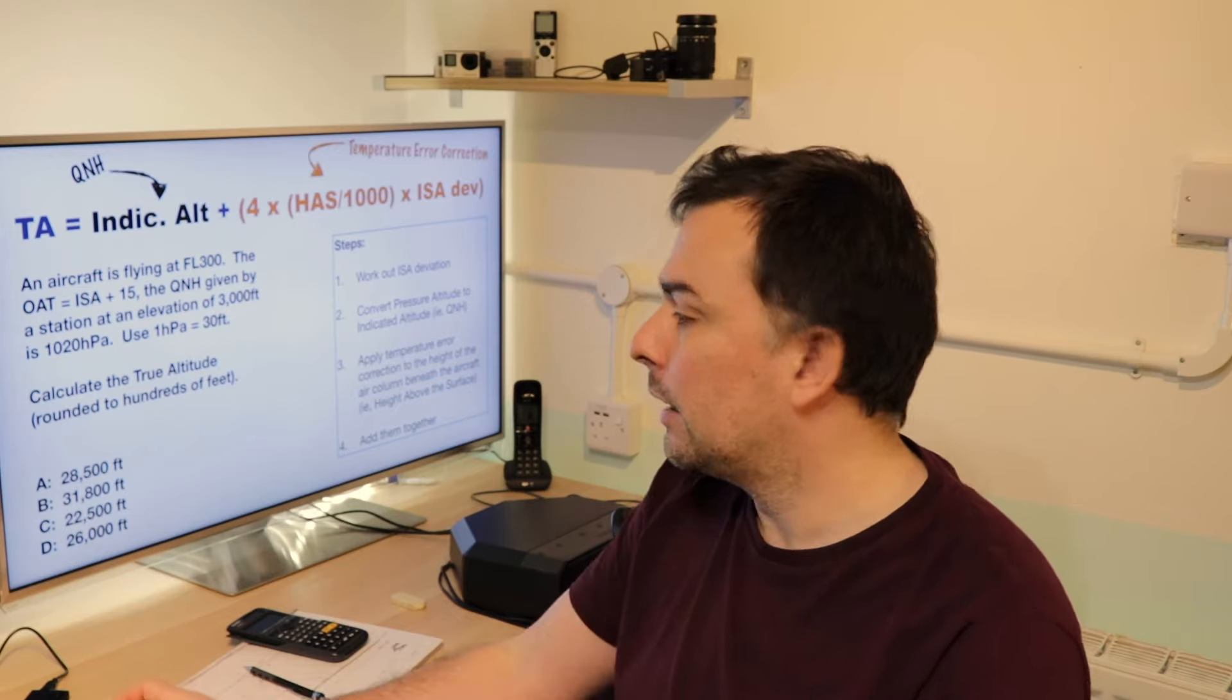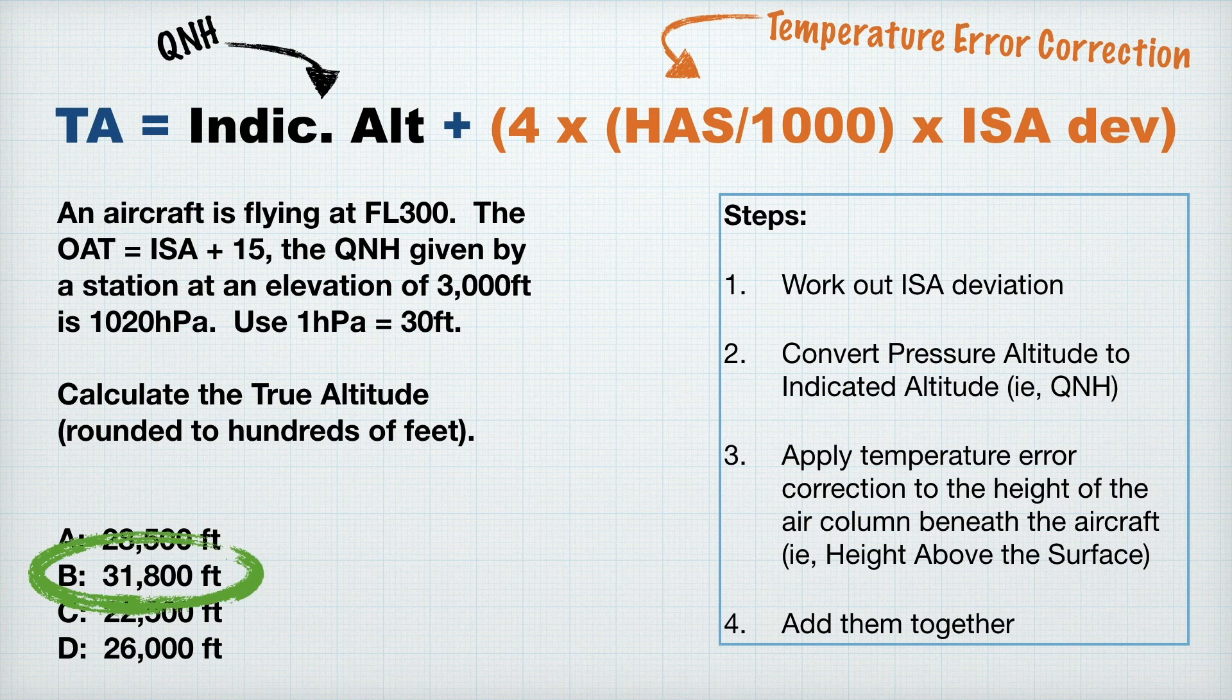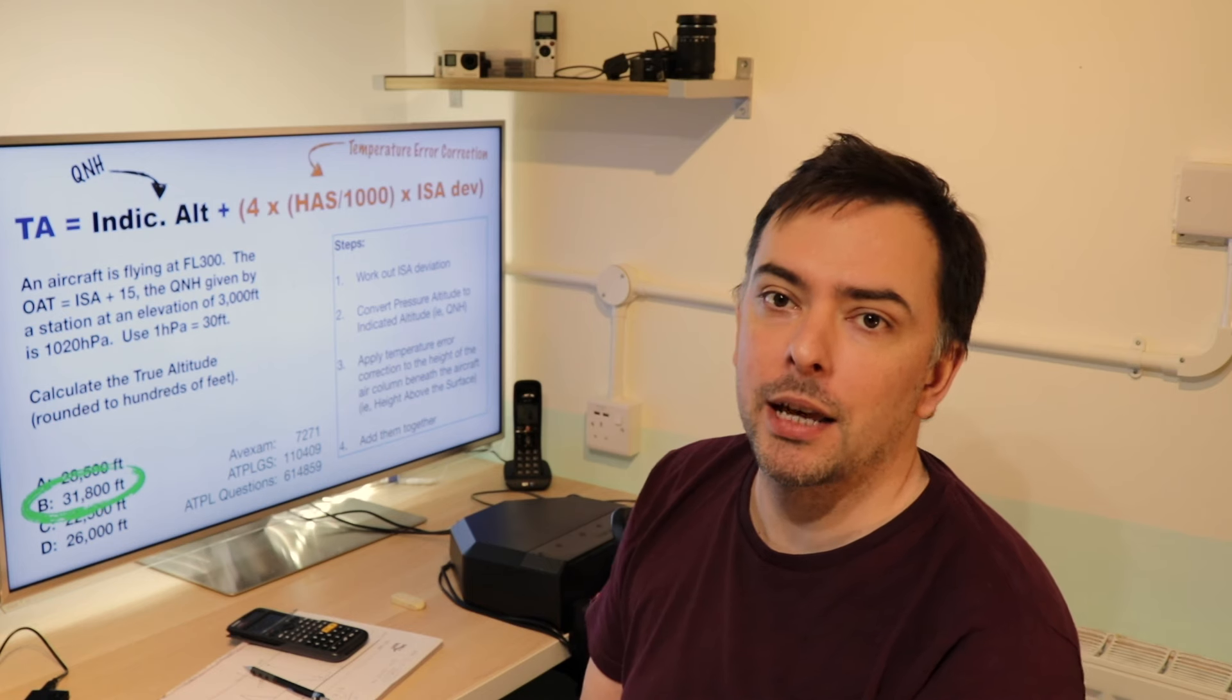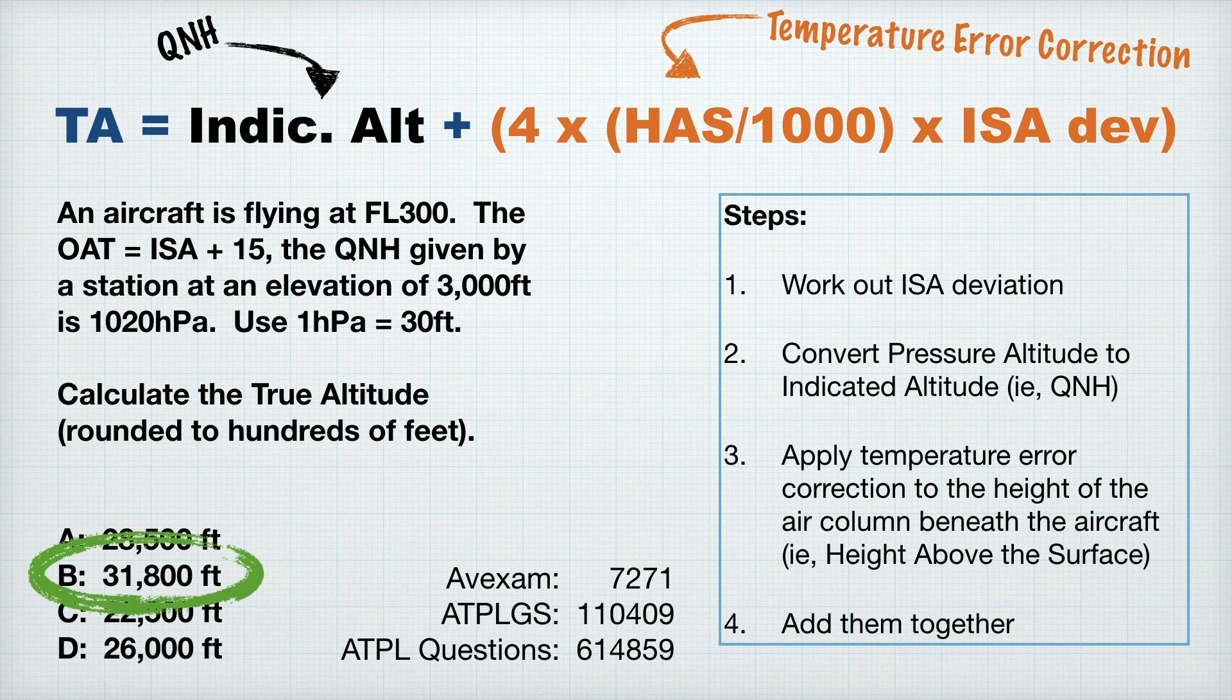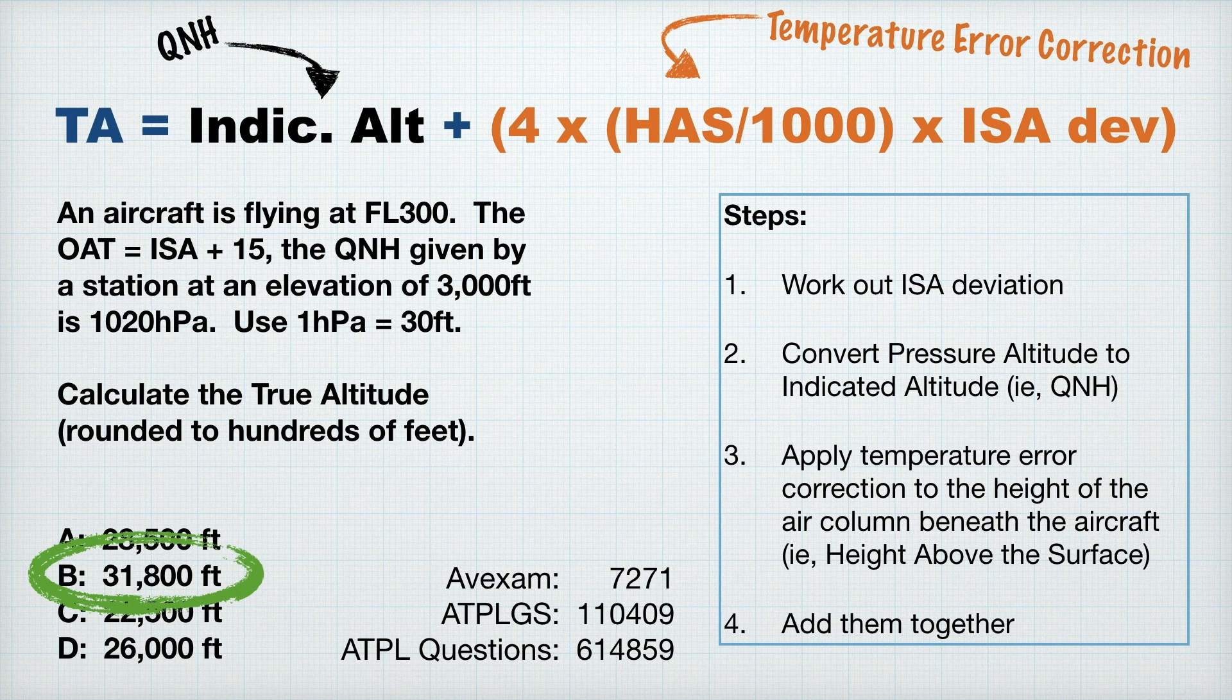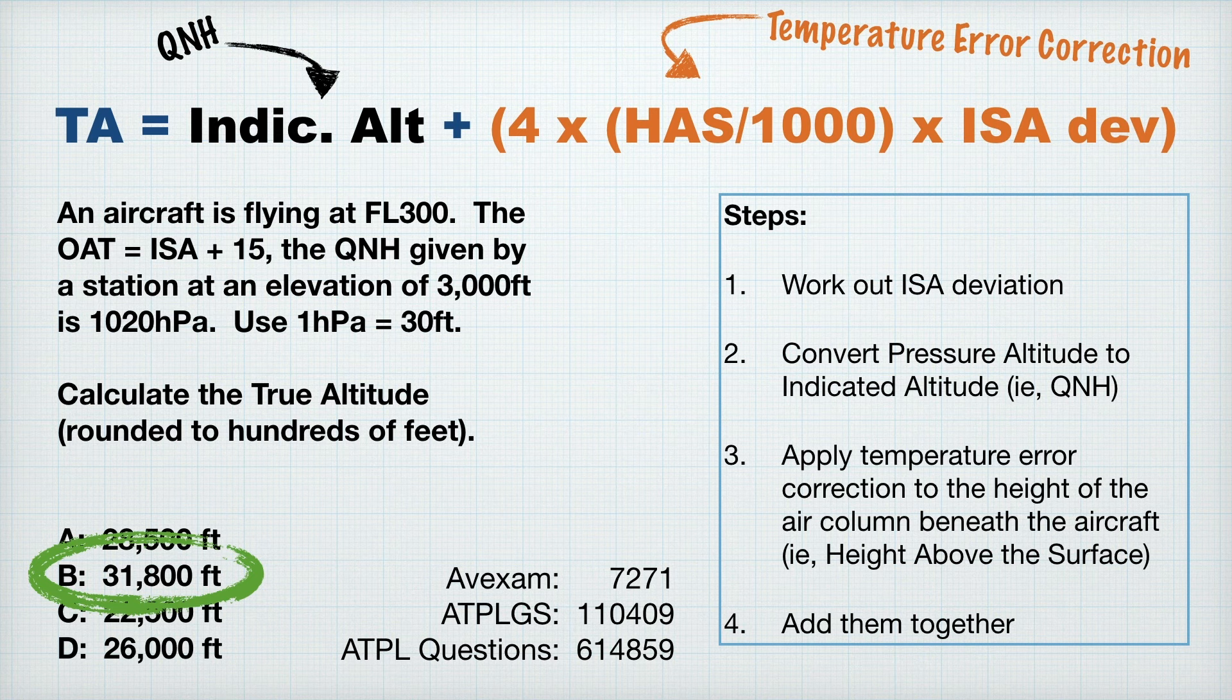Being cheeky, if you've made a mistake somewhere along the way, there's a good chance that you could end up at one of these other answers instead. Let's see what the correct answer is. Perfect. B, 31,800 feet. If you want this question on AvExam, it's question number 7271. If you want this on ATPL-GS, then that's question number 110409. And if you want this on ATPL questions, it's question number 614859. If you can find this on Bristol in their question bank, then please leave the question number in the comments below. That would be fantastic.